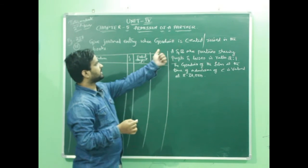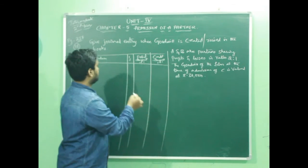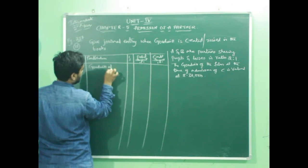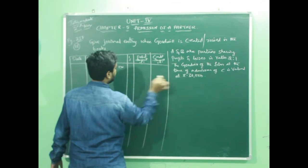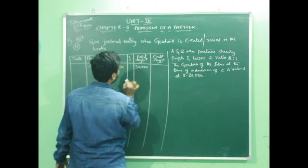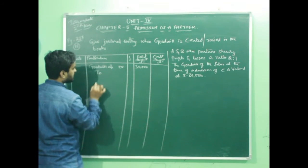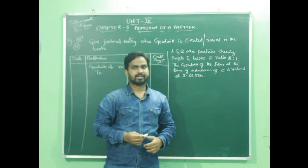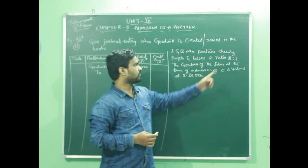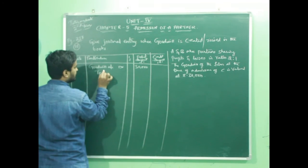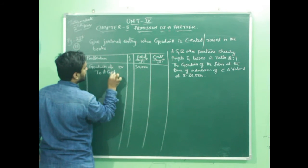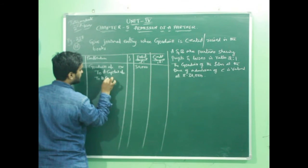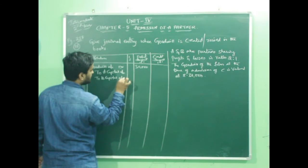You have to pass a general entry when goodwill is created or raised. The general entry will be goodwill account debit valued at 30,000. Who are partners here? A and B are old partners and they have decided to admit C as a new partner. When you value goodwill, it should be distributed among old partners in their old profit sharing ratio. It will be transferred to A capital account and to B capital account.